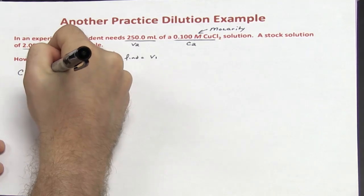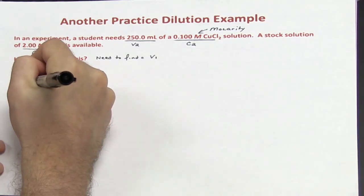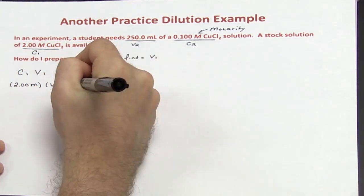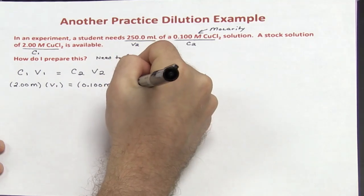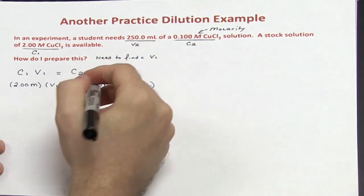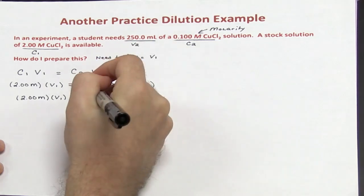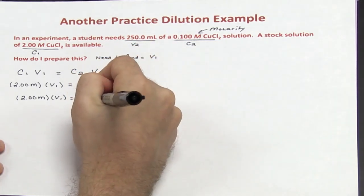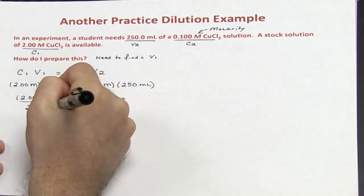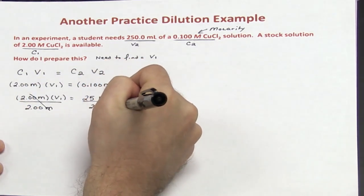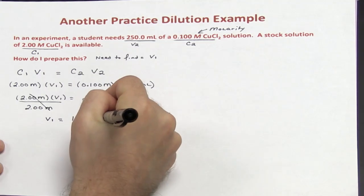Setting up the formula: C1V1 = C2V2. C1 is 2 molar, V1 is unknown, C2 is 0.100 molar, and V2 is 250 mL. Multiplying 0.1 times 250 mL gives 25 mL. Dividing both sides by 2 molar, those cancel, and V1 equals 12.5 mL of stock.